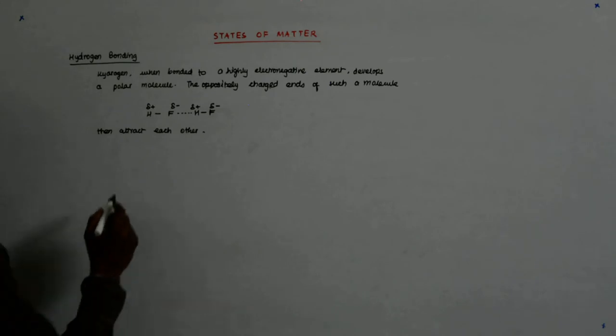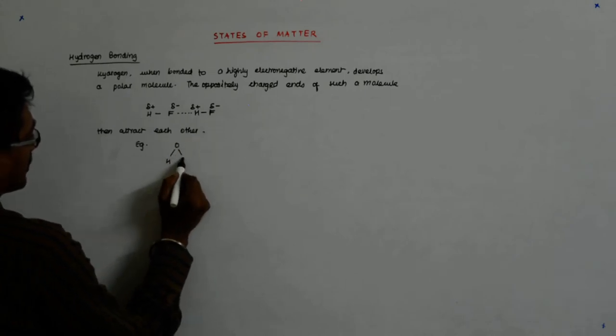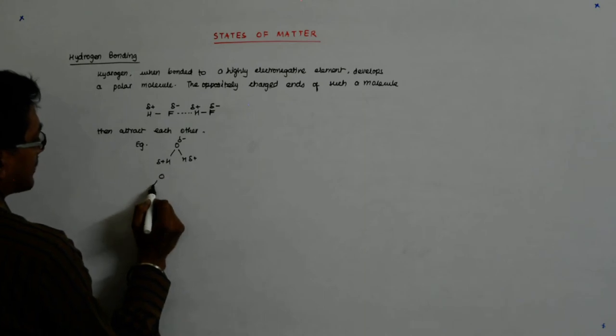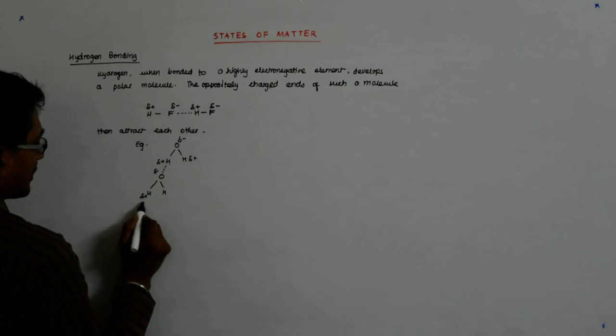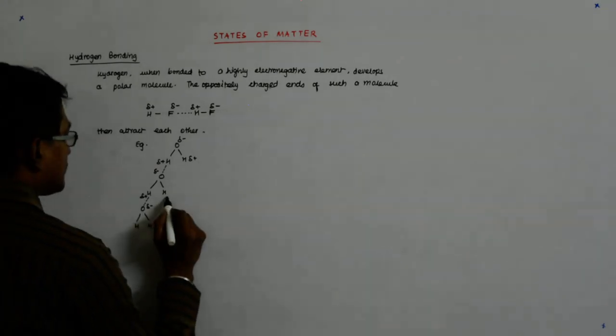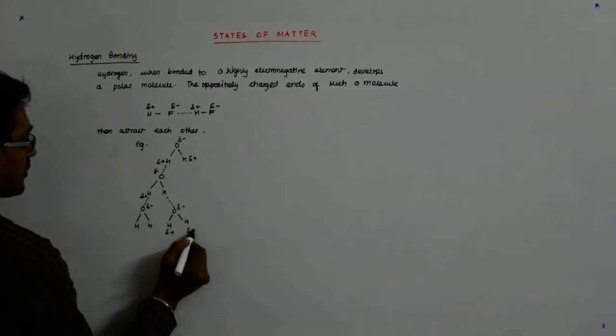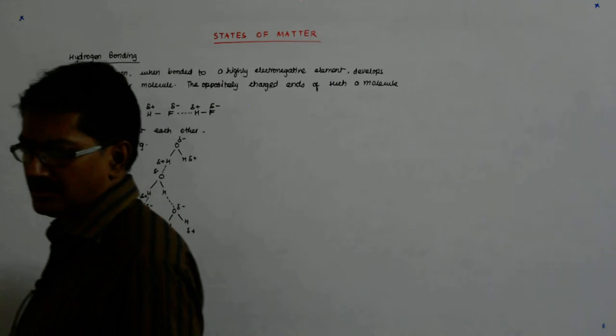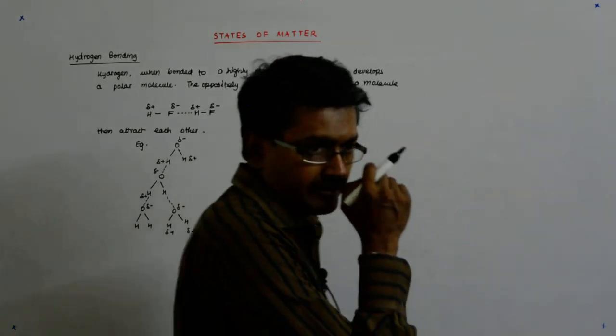And one of the most important examples of hydrogen bonding is water. So what happens? There is a delta plus here and there is a delta negative, and this molecule has an impact on this. You see how a chain kind of thing will come into play and what should happen due to this, the boiling point of water that should have been quite low, goes up and reaches 100 degree centigrade.